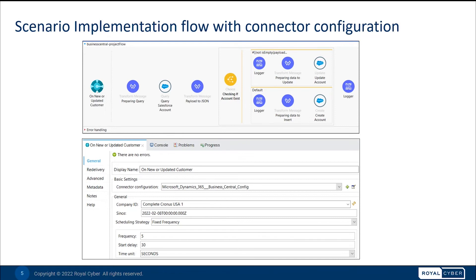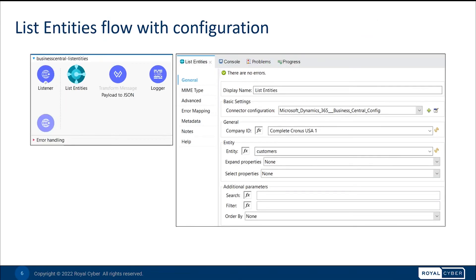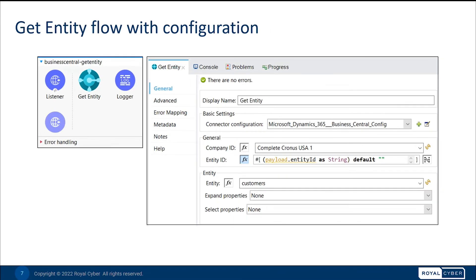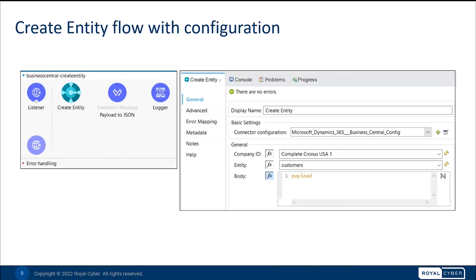For the on-new-or-update connector, we need configurations like company ID and scheduling strategy. To retrieve a list of entities applying specified filters and search queries, we need configurations like company ID and entity. To retrieve a single entity by its ID if it exists, we need configurations like company ID, entity, and entity ID.